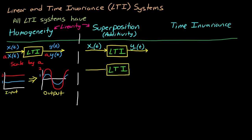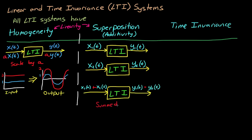Then superposition, or additivity, states that if you add the two inputs together, x1 plus x2, then the output would also be the superposition of the two separate outputs, y1 plus y2. Sometimes homogeneity and superposition are combined to state that if the input is scaled and summed, then the output will also be scaled and summed by the same amount.